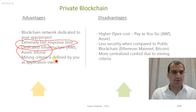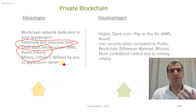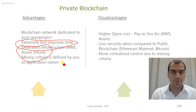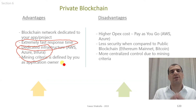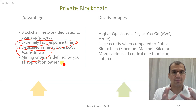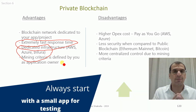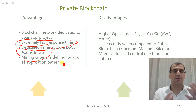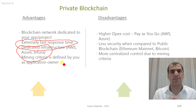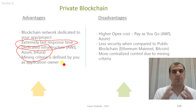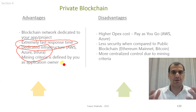Mining criteria in a private blockchain are defined by you — you set the rules for what makes a transaction valid and eligible to be added to the blocks. You can set a list of 10, 20, or 30 conditions; if those conditions are met, the transaction is valid and added to the chain. This is great for starting with a small app or testing with VIP customers. In contrast, on a public blockchain you must adhere to their security standards before deploying.